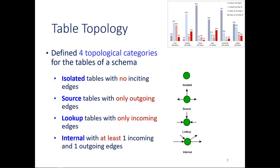What we did is that we have defined four fundamental topological categories for the tables of a schema, depending on the structure of the edges around the node. So if the table's node has no inciting edges, zero degree, we call it isolated. If it is a fountain node with only outgoing edges, we call it source. If it has only incoming edges, it's a sink, we call it lookup. And the rest of the tables, which are very few actually, having both incoming and outgoing edges, we call them internal.